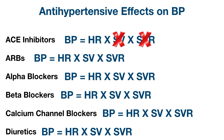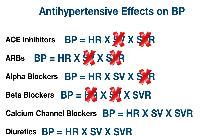ARBs block angiotensin II receptors and will have a similar effect to ACE inhibitors: a decrease in systemic vascular resistance and stroke volume. Alpha blockers decrease blood pressure primarily by blocking alpha-1 receptors on blood vessels, decreasing vasoconstriction and systemic vascular resistance. Beta blockers decrease blood pressure primarily by blocking beta-1 receptors in the heart, decreasing heart rate as well as stroke volume due to decreased cardiac contraction.